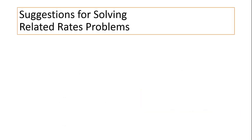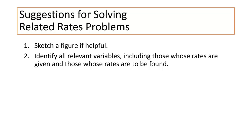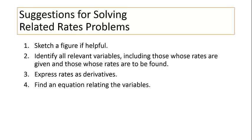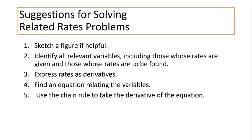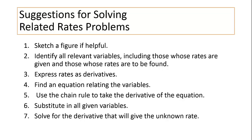Here are a few suggestions for solving related rates problems. First, sketch a figure if helpful. Second, identify all relevant variables, including those whose rates are given and those whose rates are to be found. Next, express those rates as derivatives. Find an equation relating your variables. Use the chain rule to take the derivative of the equation. Substitute in all given variables — note that this substitution happens after you take the derivative, which is very important. Finally, solve for the derivative that will give the unknown rate.